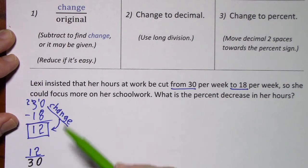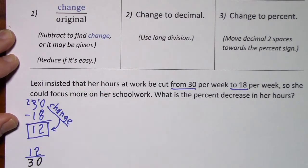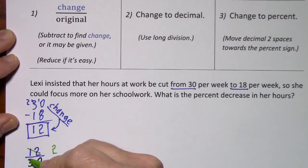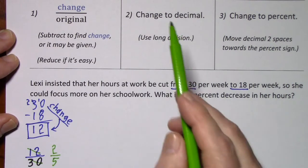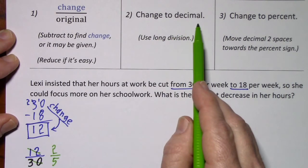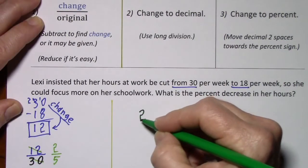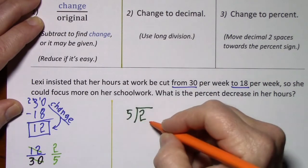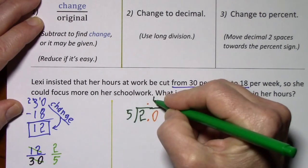Notice with this fraction, we can reduce very easily. Divide by 6 and divide by 6 leaves us with 2 over 5. Now this two-fifths we will change to a decimal — we'll use long division. So we have 2 divided by 5. It doesn't fit, so 5 goes into 20 four times.